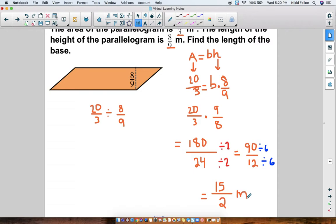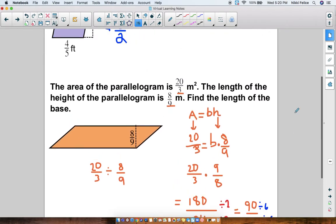Let's simplify by 6. So 90 divided by 6 is 15, and 12 divided by 6 is 2. And we can't simplify any more, so that's the answer. The base of this triangle is 15 over 2 meters. So same thing, even though we have fractions, you plug in what you know and solve.